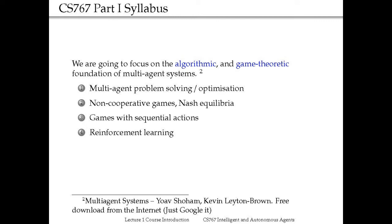In this course, we're going to focus on the algorithmic and game theoretic foundation of multi-agent systems. Game theory really plays a fundamental role in the development of multi-agent systems, and therefore I will spend quite a big proportion of my class talking about game theory and how it's related to artificial intelligence. We're going to look at four topics: first, scenarios where a multi-agent system can be used to solve optimization problems; second, the theory of games — in particular non-cooperative games and equilibria concepts such as Nash equilibria; then sequential action games, games with partial information, and repeated games; and lastly, reinforcement learning and how it is relevant to multi-agent systems.